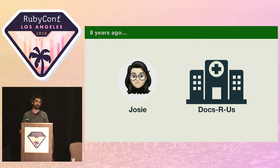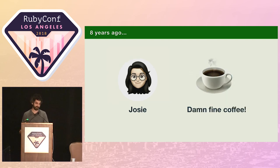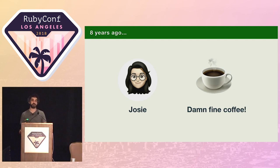Meet Josie — again. Josie is an engineer at DoxaRus, a startup building appointment booking software for medical professionals. Josie was pretty much one of the first hires when they secured funding, and she loves the fast pace of startup life. Today's got off to a great start. Josie got up early to beat the rush hour, and enjoyed reading a really interesting blog post about revision histories while she sipped her delicious, lovingly crafted single-origin pour over.